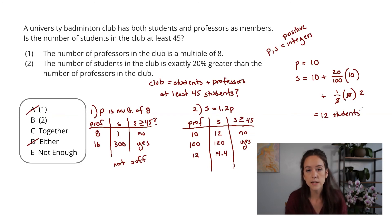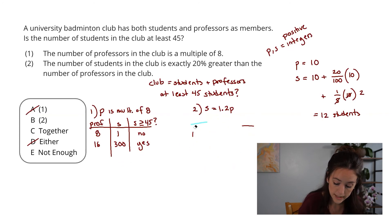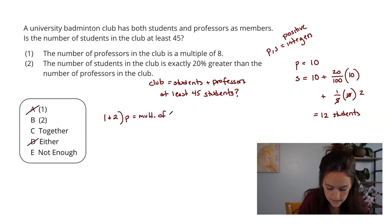So now I'm ready to combine these two facts, the fact that the professor has to be a multiple of 8 and a multiple of 5. Whenever I combine statements, I like to rewrite them because that ensures that I'm keeping track of everything and I'm combining it well and I'm not missing anything. In this case, 1 and 2 combined tells me that the professors is a multiple of 8 and a multiple of 5.